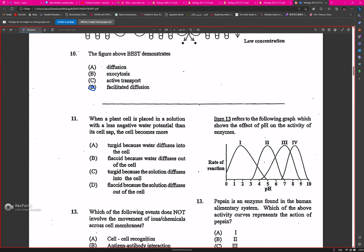Question eleven: when a plant cell is placed in a solution with a less negative water potential than its cell sap, the cell becomes more what? Turgid or flaccid? I have a feeling we always have some disparity when it comes to water potential. Let me give a brief explanation for this.